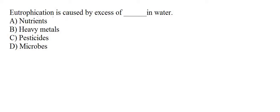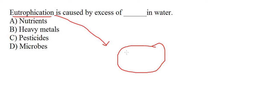Next question: eutrophication is caused by excess of what in water? In a water body, you will see a green-coloured coating in some areas — a layer of algae on the water surface. This happens when minerals and nutrients are in very high excess quantity, causing phytoplankton, algae, and aquatic plants to grow densely. The main cause is sewage waste and factory or fertilizer waste discharged into water bodies.